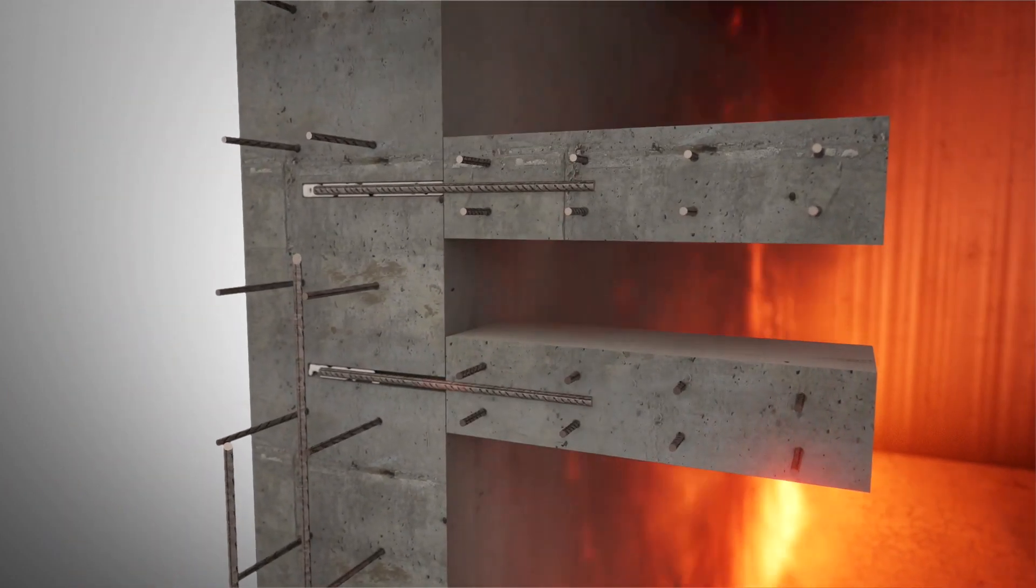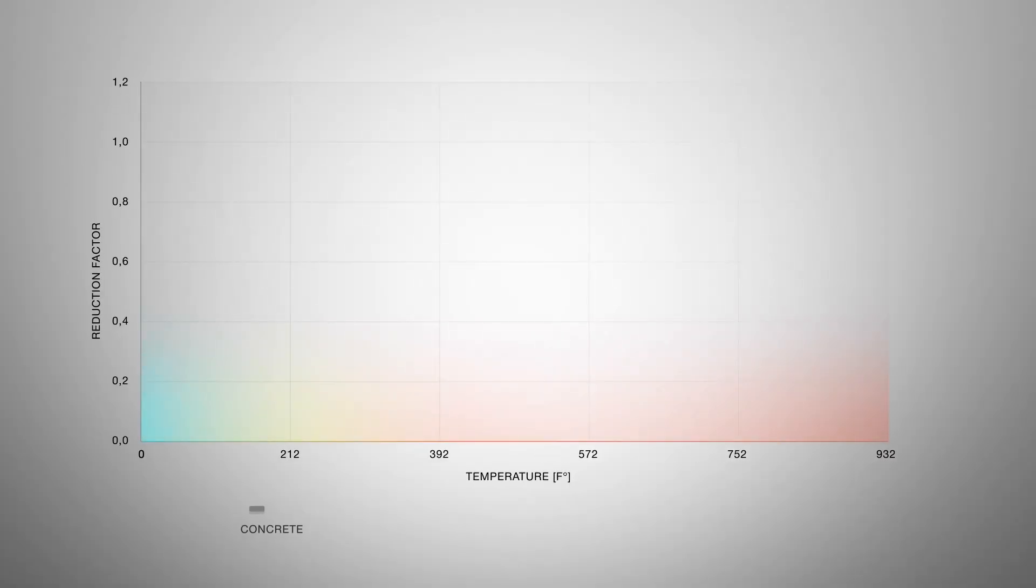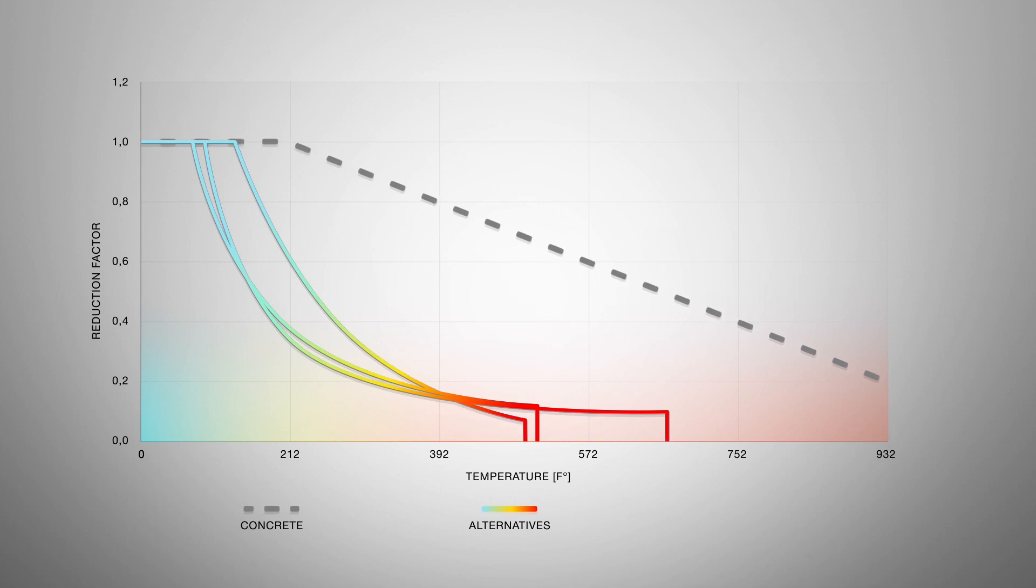Here, the rebar must be protected because most chemical adhesives offer little fire resistance, losing significant bond strength at 300 degrees and failing at around 660 degrees. But Hilti's new FP700R offers a solution as it was developed to resist temperatures up to 932 degrees with limited bond strength loss.